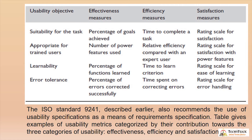This table represents the usability metrics categorized by their contribution towards three categories of usability: effectiveness, efficiency, and satisfaction. In the third category, one is a usability objective — how you categorize and represent it in the table.